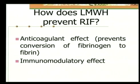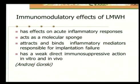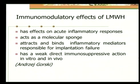How does low molecular weight heparin prevent recurrent implantation failure? Coagulation is a chain of events involving various protease enzymes, ultimately leading to the conversion of fibrinogen to fibrin. Heparin or low molecular weight heparin acts at many levels in this coagulation cascade, inhibiting the conversion of fibrinogen to fibrin and ultimately preventing clot formation. The lesser well-known effects are the immunomodulatory effects — low molecular weight heparin acts as a molecular sponge by virtue of its charge, attracting and binding inflammatory mediators responsible for implantation failure. It has also been shown to have a weak direct immunosuppressive action in vitro and in vivo.